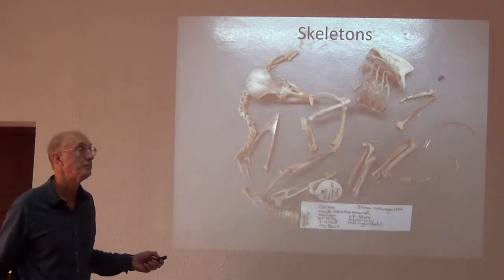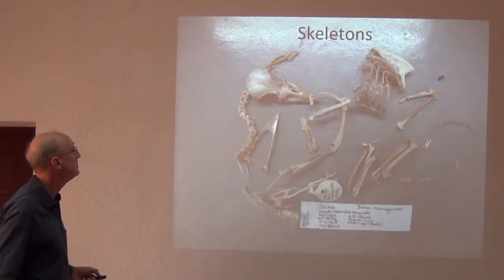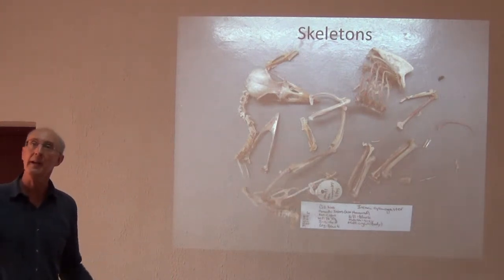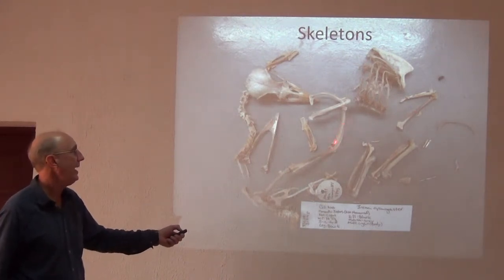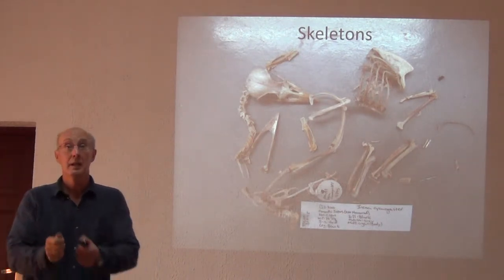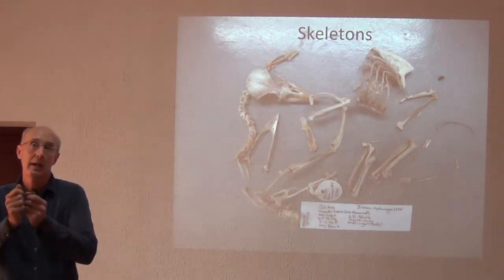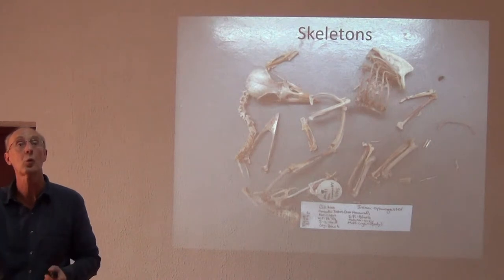One thing that's missing from a final skeleton specimen is numbering. For each specimen you have a catalog, and each bone needs to have that catalog number written on it in permanent ink. Because if you're comparing individuals of the same species and matching bones, it's easy to mix them up — so it's critical that we number each bone.